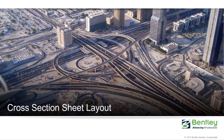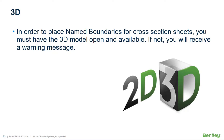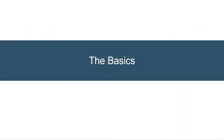Now we'll turn to the cross-section sheet layout. I want to first point this out: in order to place name boundaries for cross-section sheets, you must have the 3D model open. Cross-sections are being cut directly from the 3D model, so the boundaries are placed in the 3D model. If you don't have it open, you will receive a warning message. That's just a best practice to remember.